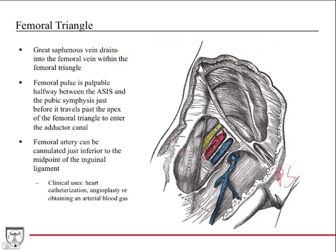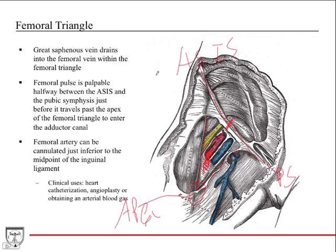The femoral pulse is very clinically relevant. To palpate it, go halfway between the pubic symphysis and the ASIS along the inguinal ligament, and palpate just before the apex of the femoral triangle. The femoral artery can be cannulated just inferior to this midpoint of the inguinal ligament — this is used for heart catheterization, angioplasty, and to visualize coronary vessels by threading a catheter up through the iliac, the aorta, and into the heart.